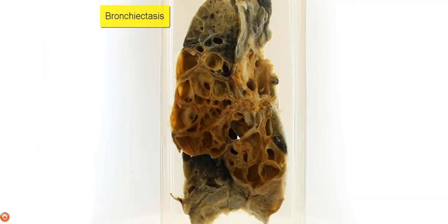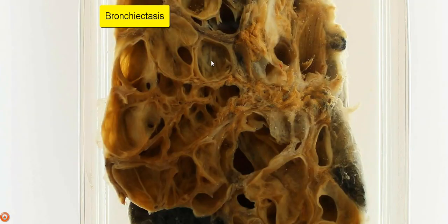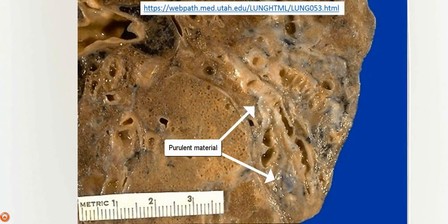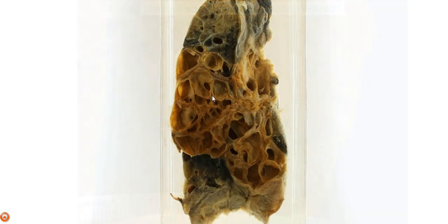So this condition is bronchiectasis. In the fresh lung, we would have seen a lot of purulent exudates lining these dilated air spaces, but because this specimen has been processed, most of the purulent material has dropped out. Bronchiectasis is actually the damage or destruction of the walls of the bronchi and bronchioles, leading to permanent dilatation.